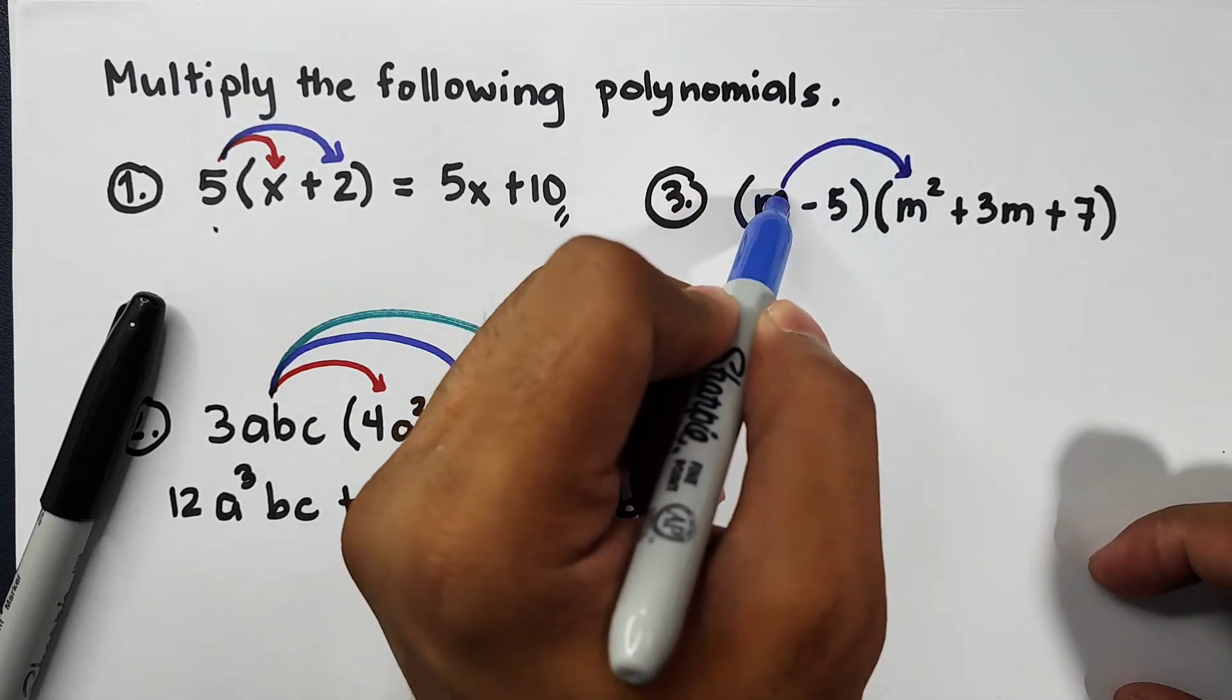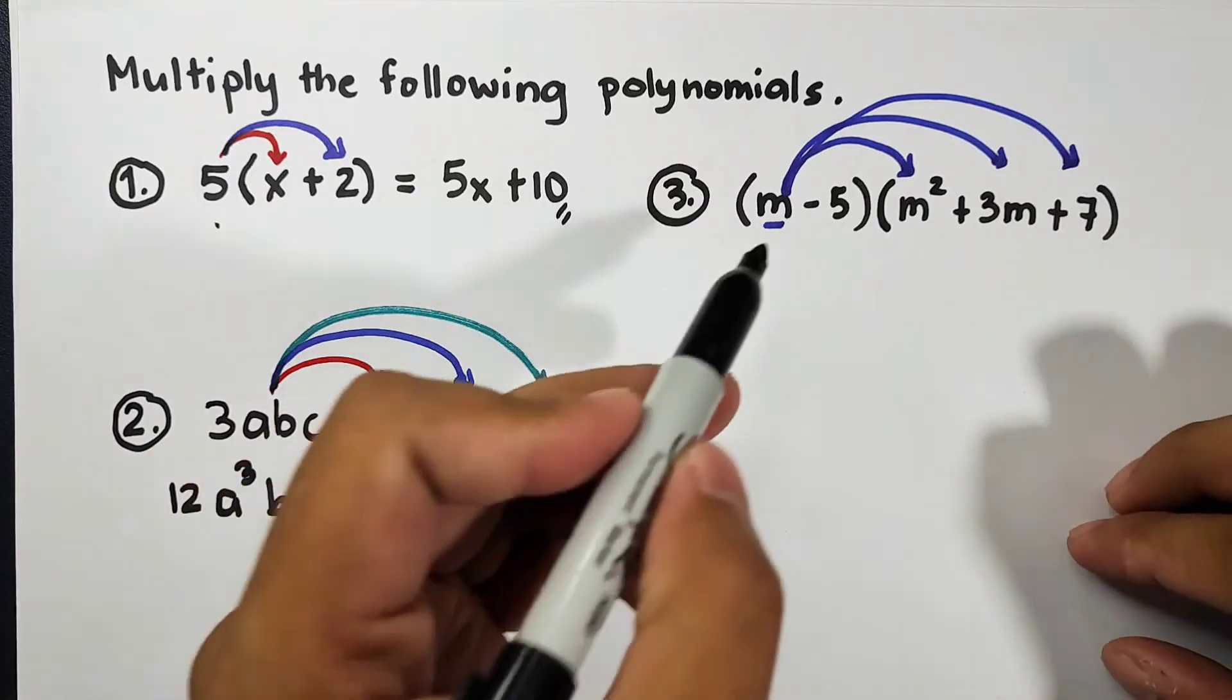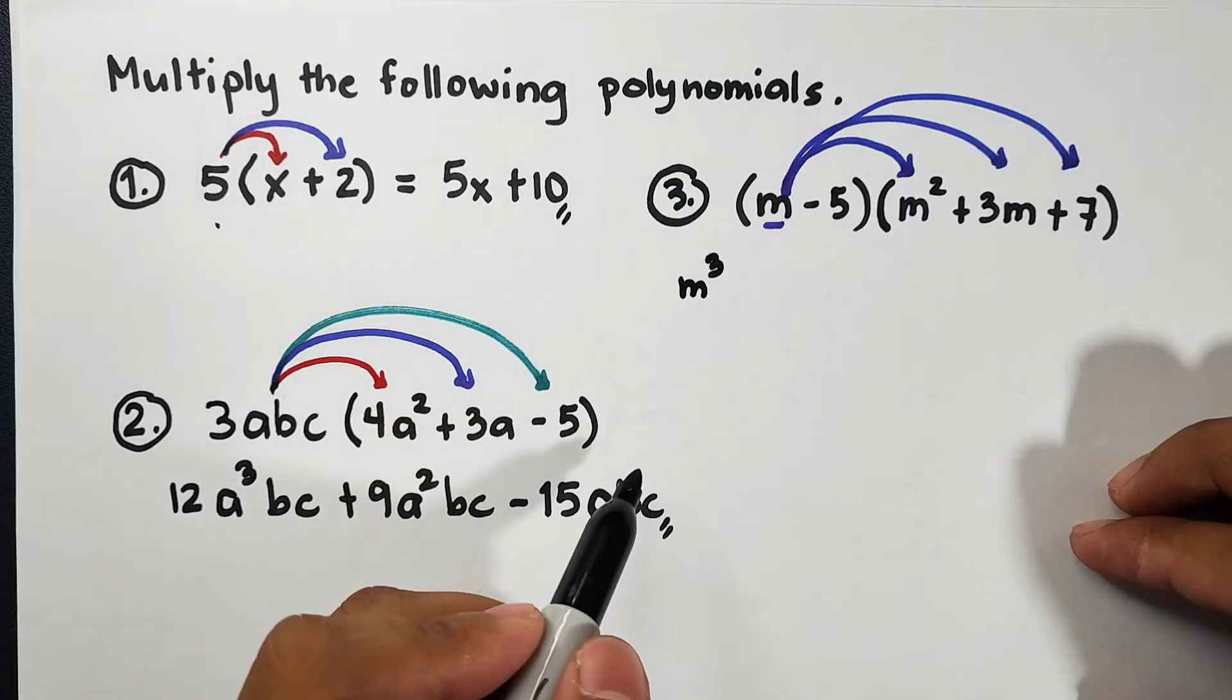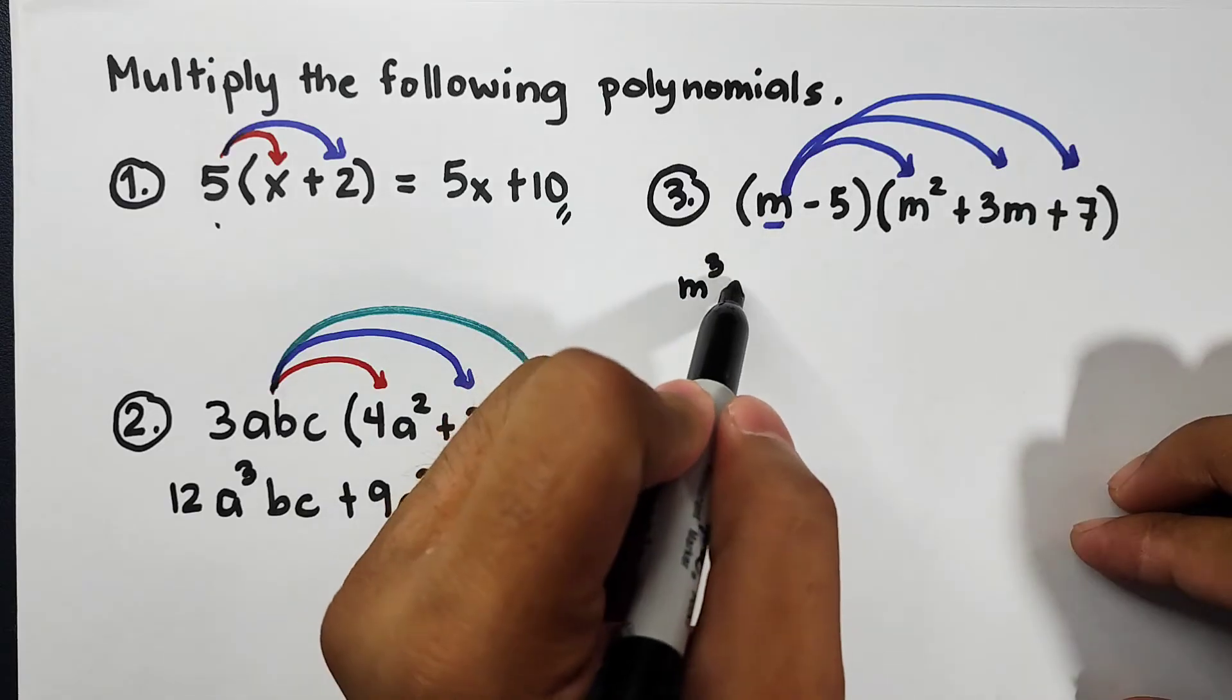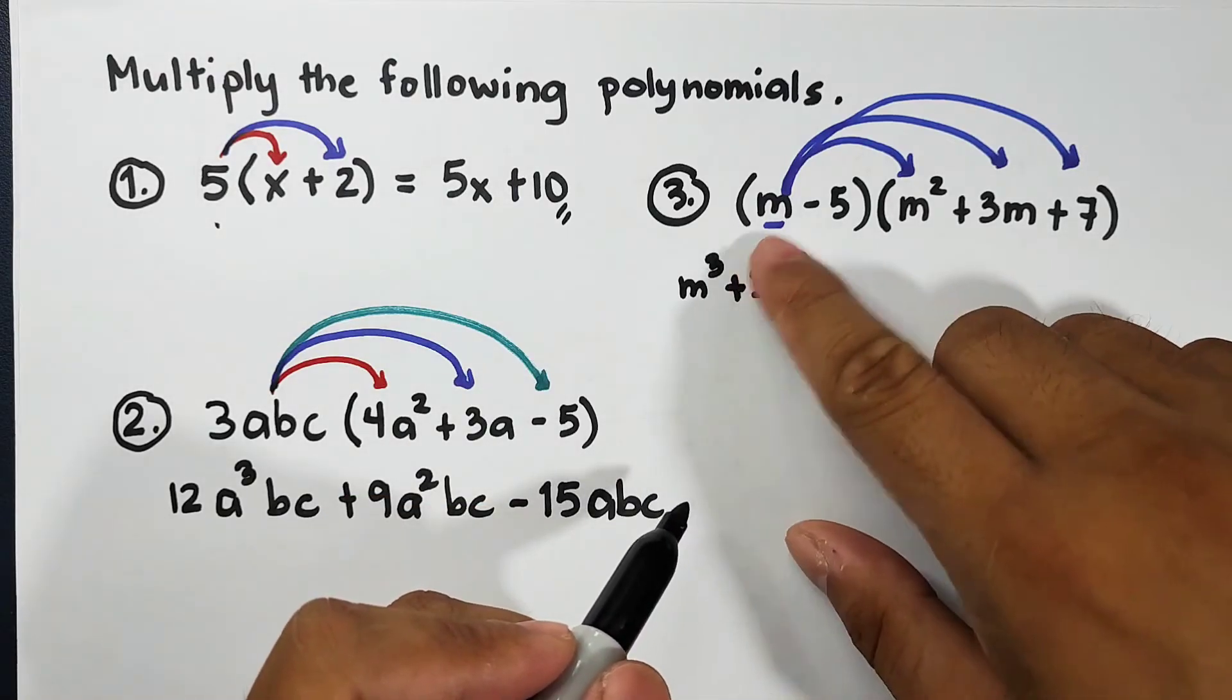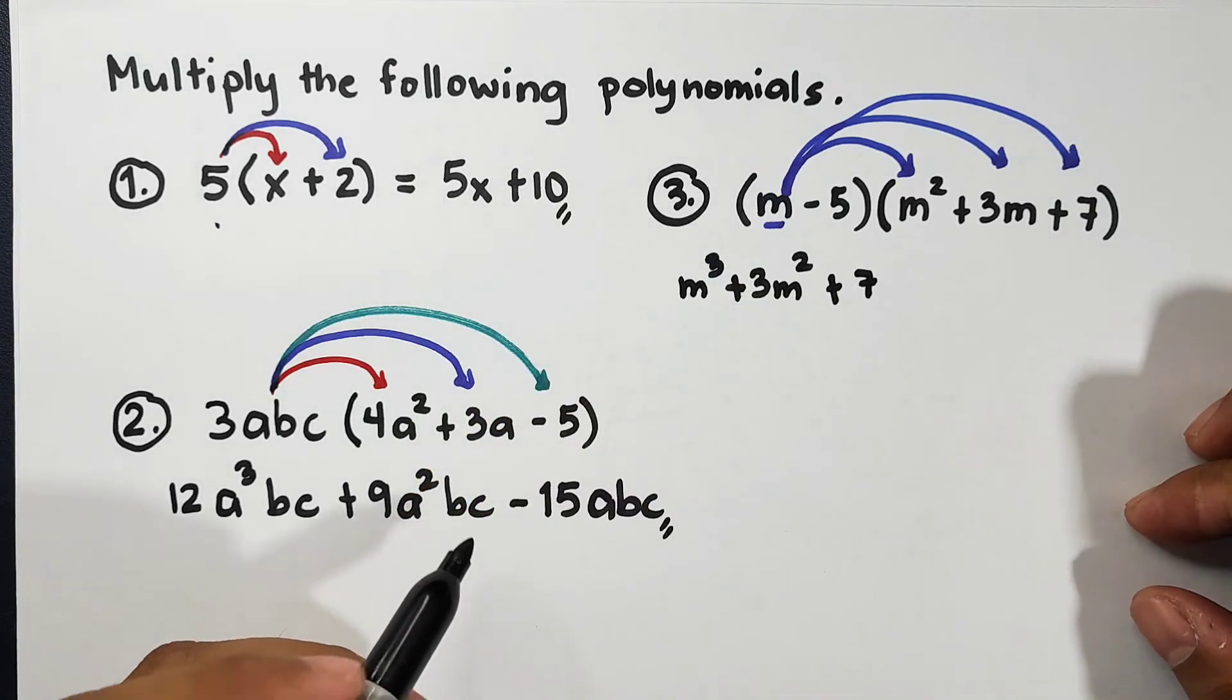One by one, let's try to distribute it. So let's try now: m times m² is simply m³. Next, m times 3m, that is plus 3m². Then m times 7, that is plus 7m.